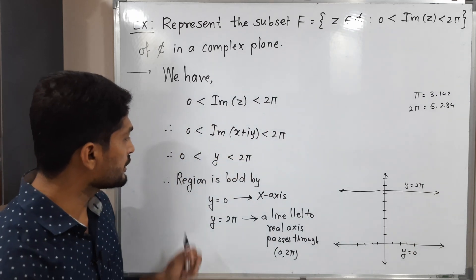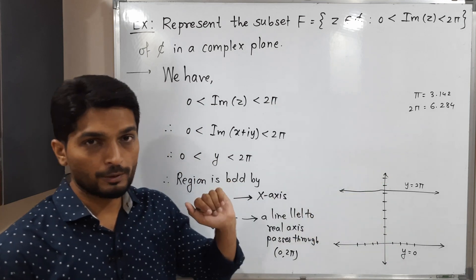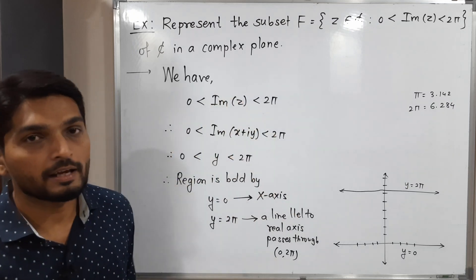So what we have mentioned here: the region is bounded by y equals 0 and y equals 2π. That means the region bounded by these two lines, that is nothing but set F.